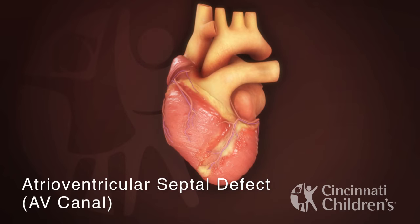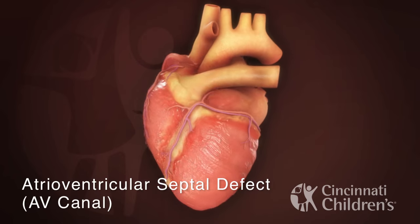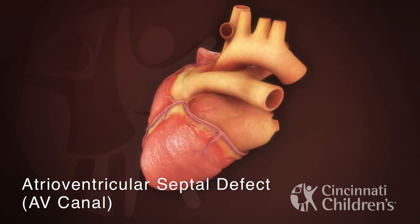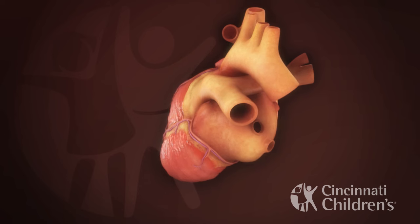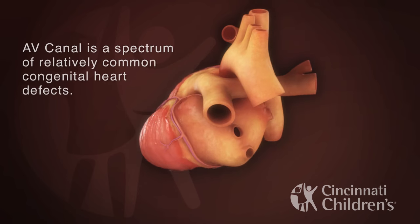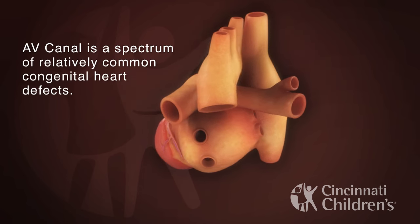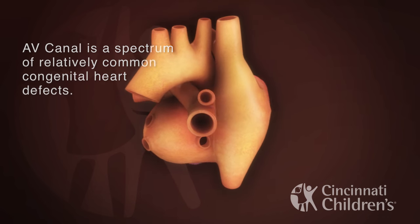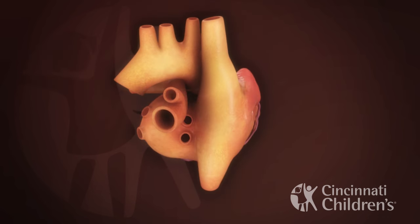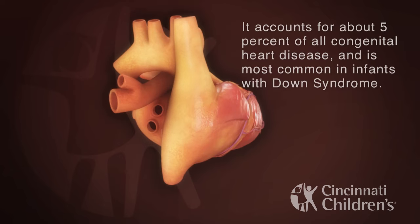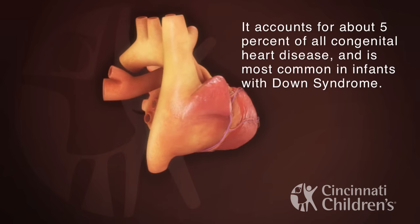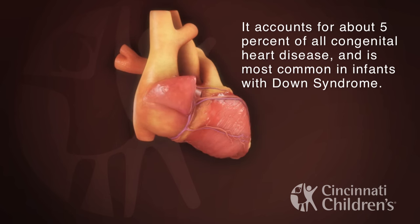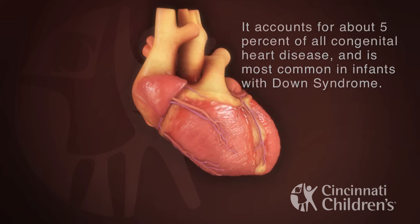Atrial ventricular septal defect, also known as AV Canal, is a spectrum of relatively common congenital heart defects. It accounts for about 5% of all congenital heart disease and is most common in infants with Down syndrome.